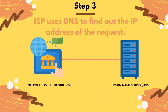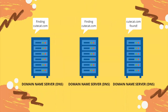If your ISP is unable to find the IP address in the current DNS, it will relay that information to other DNS servers until it finds the DNS that knows the IP address of the information you are requesting.